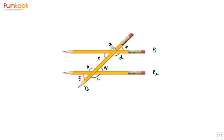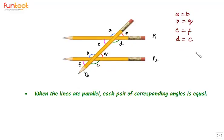So what this means is angle A is equal to angle B, so A equals B. Angle P is equal to angle Q, so P equals Q. Angle E is equal to angle F. And angle D is equal to angle C.